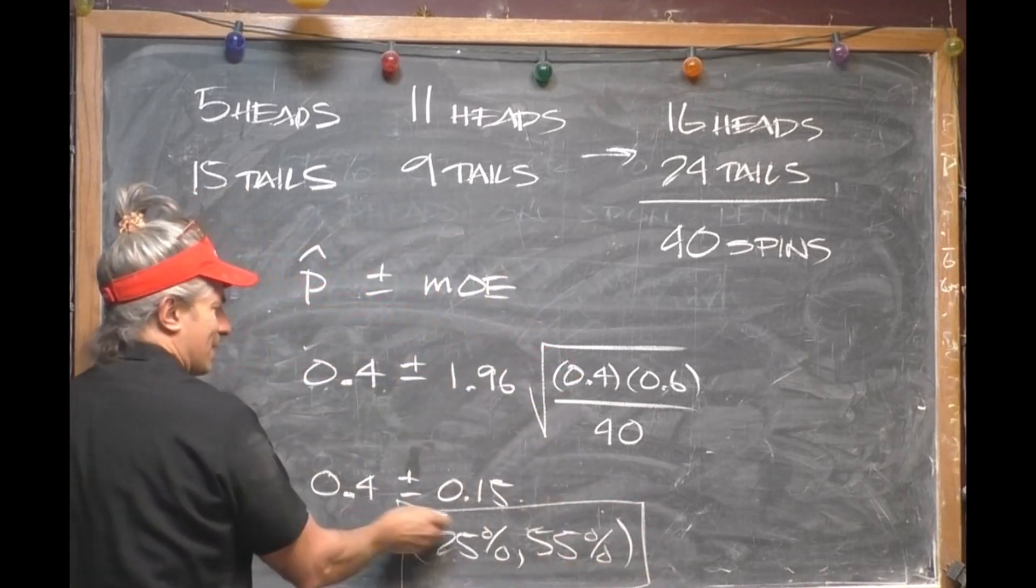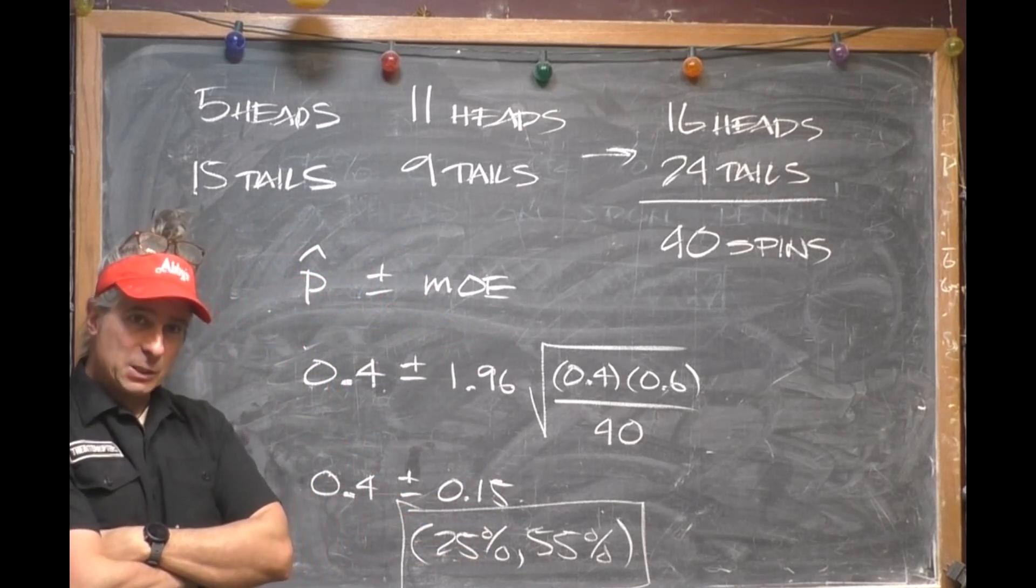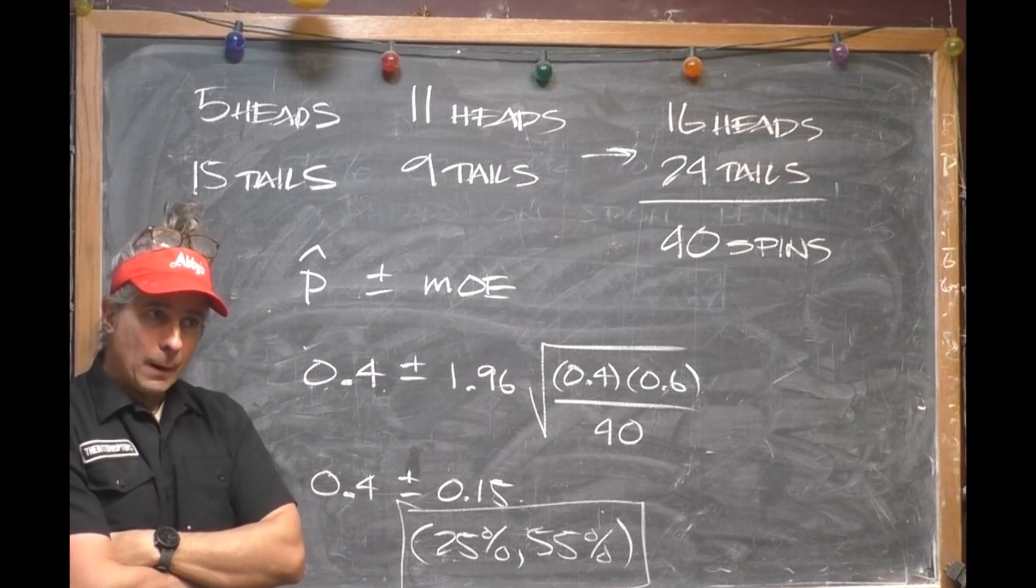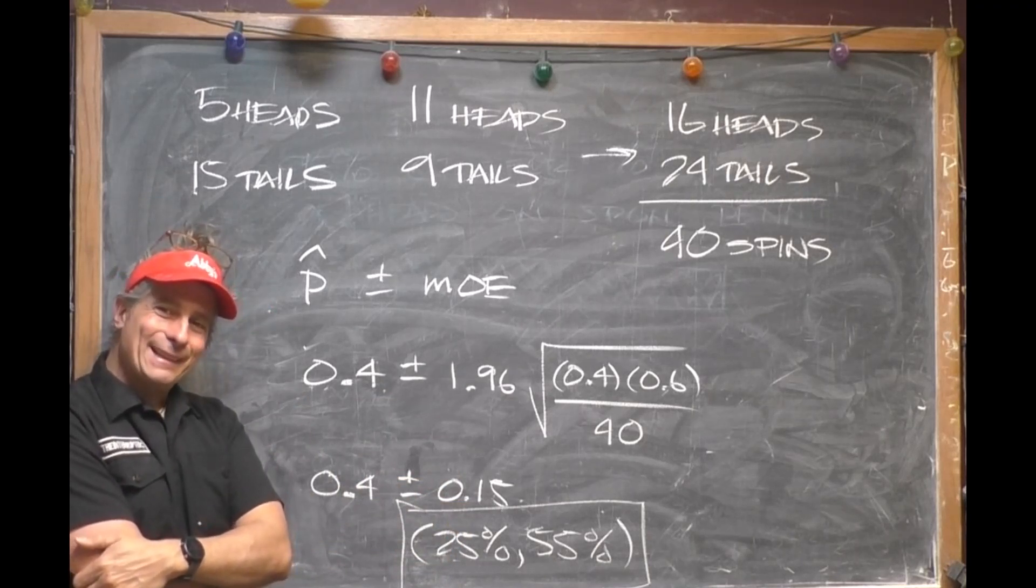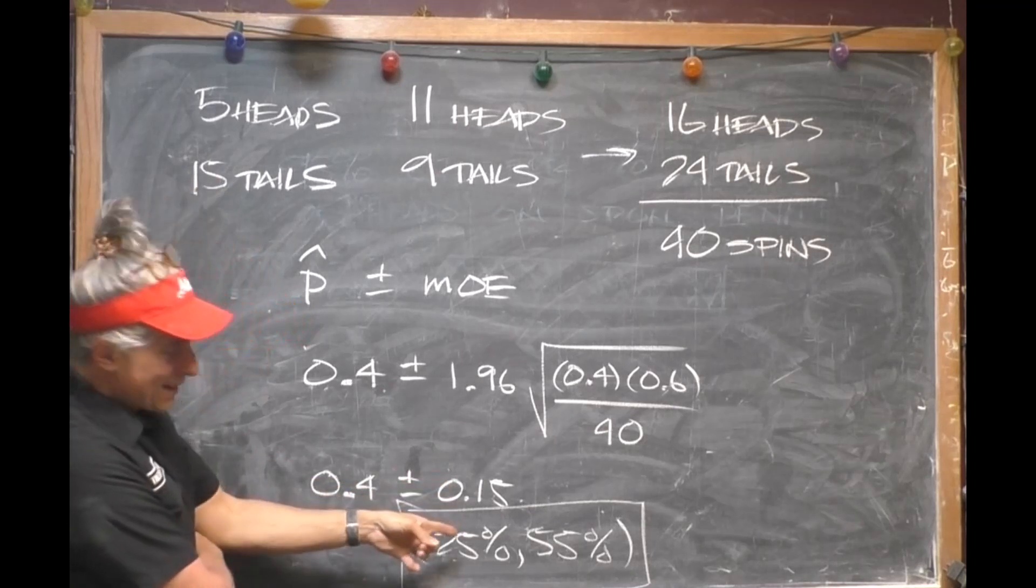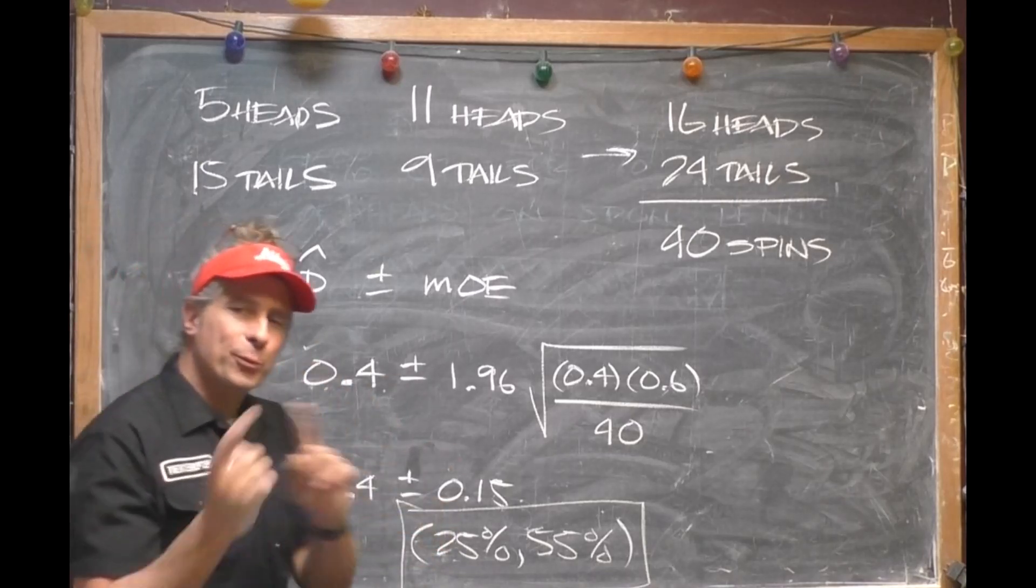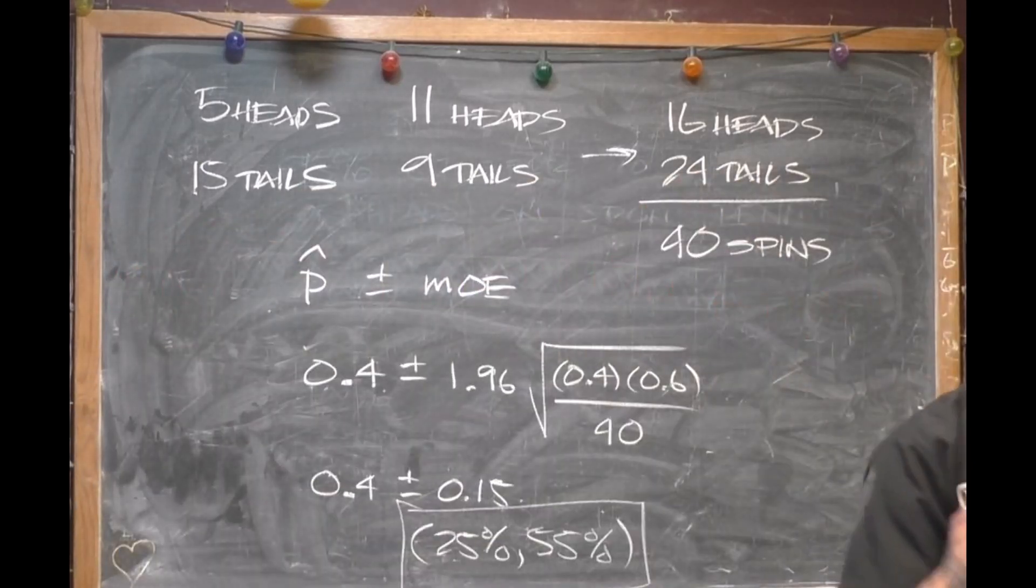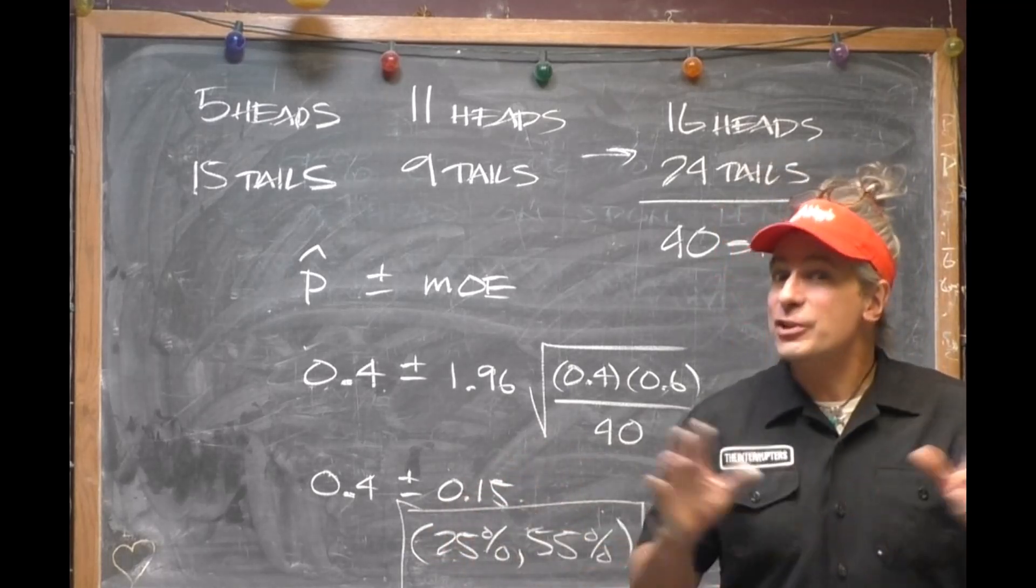So based on a sample of 40 coins spun, we can't tell that there's a difference between spinning and flipping. And do you see why? 50% is in there now. 50% is in that range.